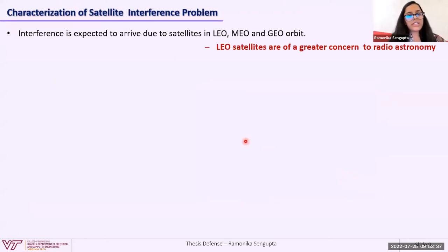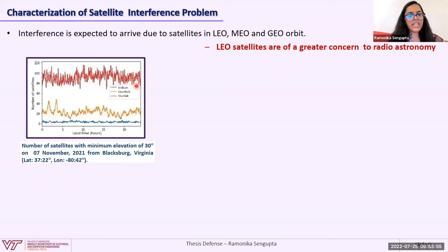Moving to characterization of the satellite interference problem: interference is expected from satellites in LEO, MEO, and GEO orbits. LEO satellites are of greater concern due to their large number in orbit. We have considered three LEO satellites — Iridium, OneWeb, and Starlink — as representative cases. A plot shows the number of satellites with minimum elevation of 30 degrees on 7 November from Blacksburg, with 30 degrees chosen to account for obstruction by buildings, trees, and terrain. The mean number of satellites are approximately 93 for Starlink, 22 for OneWeb, and 3 for Iridium.